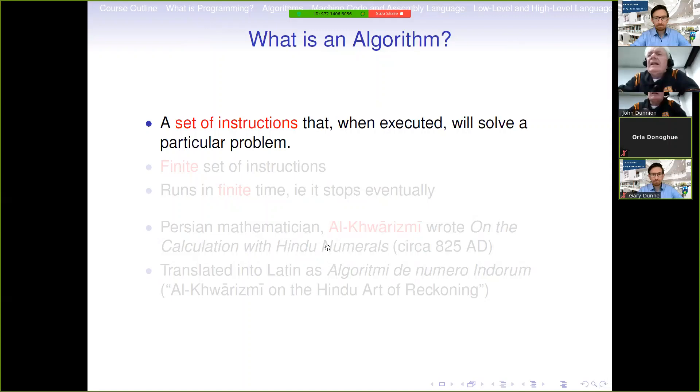So what is an algorithm? An algorithm is a set of instructions that when executed will solve a particular problem. Typically it involves a finite set of instructions, so there's a limited number of instructions, and also it runs in finite time. That is, it stops eventually. Now there are some situations where we don't want the algorithm to stop. For example, if our algorithm is monitoring the nuclear power plant down the road, then we want that to run all the time. Similarly, if our algorithm is controlling the airbus that we're flying in, then we want that to keep going all the time, or at least until some point that the pilot turns off the ignition or whatever they do to stop an airplane.